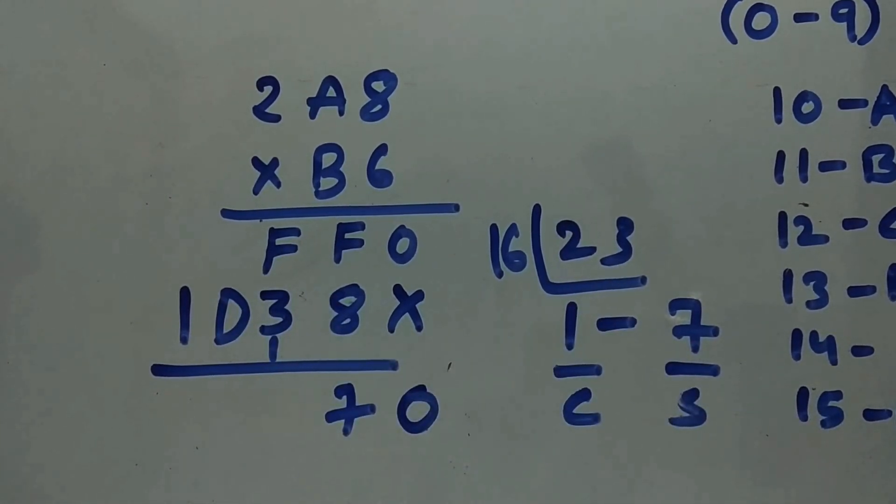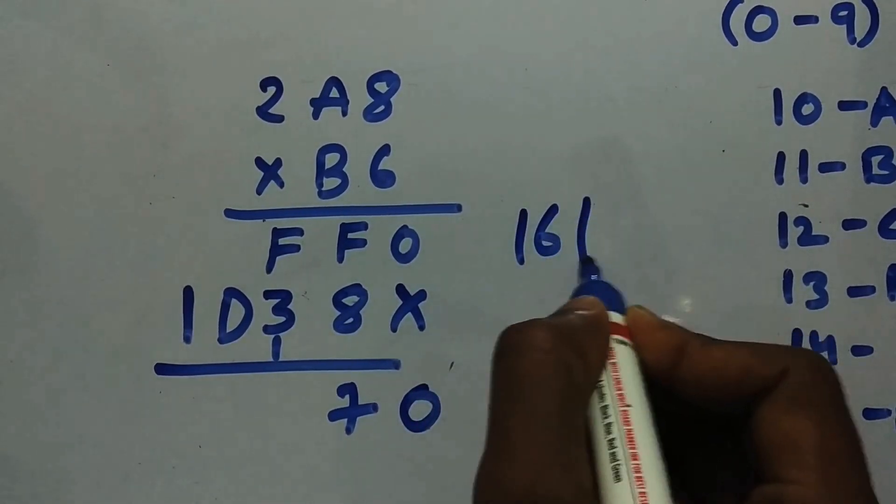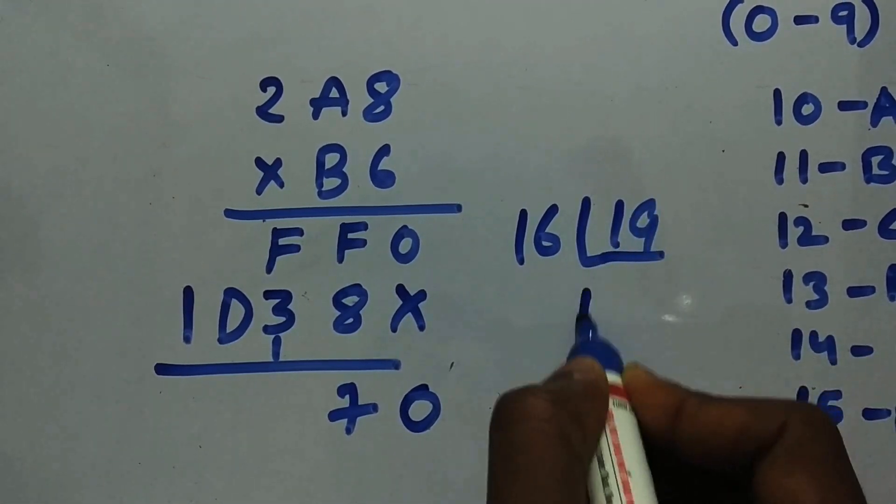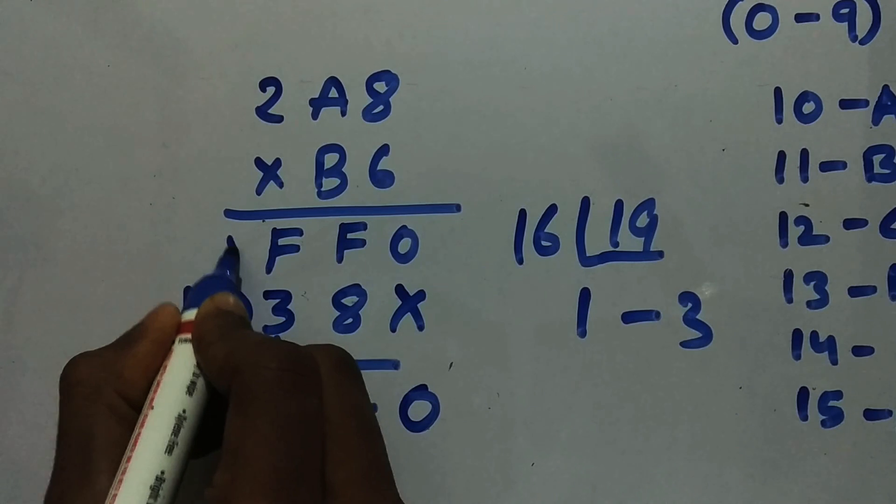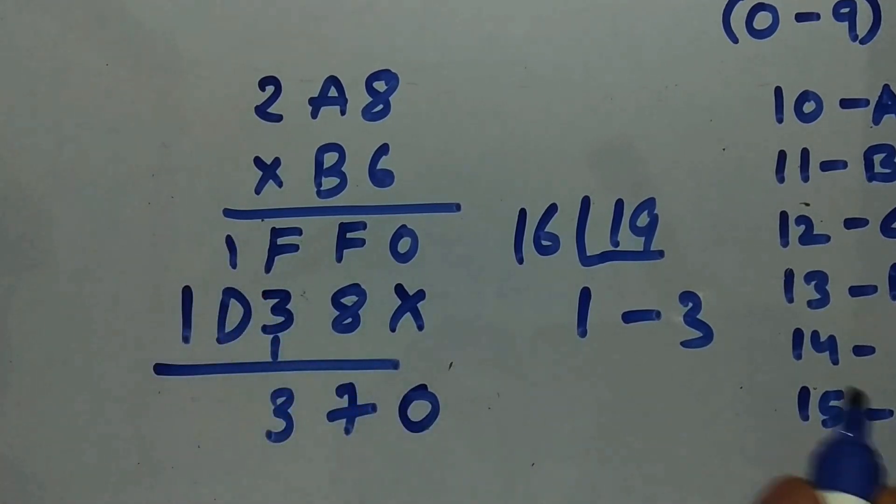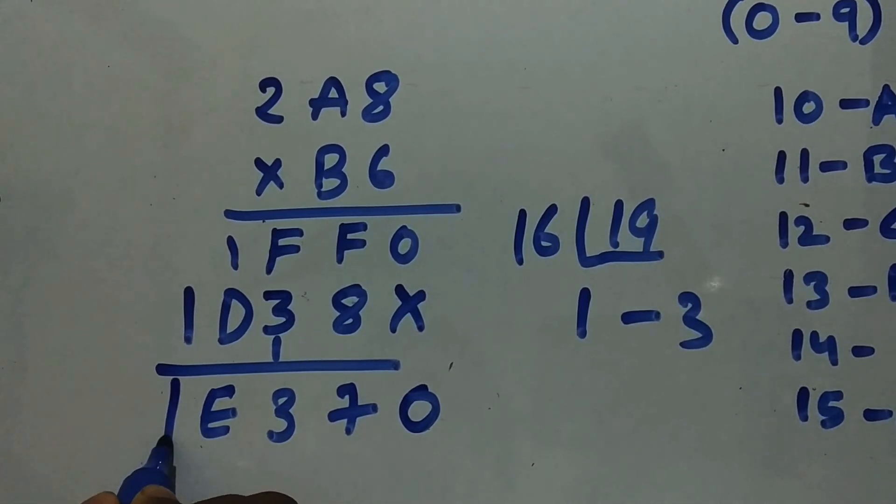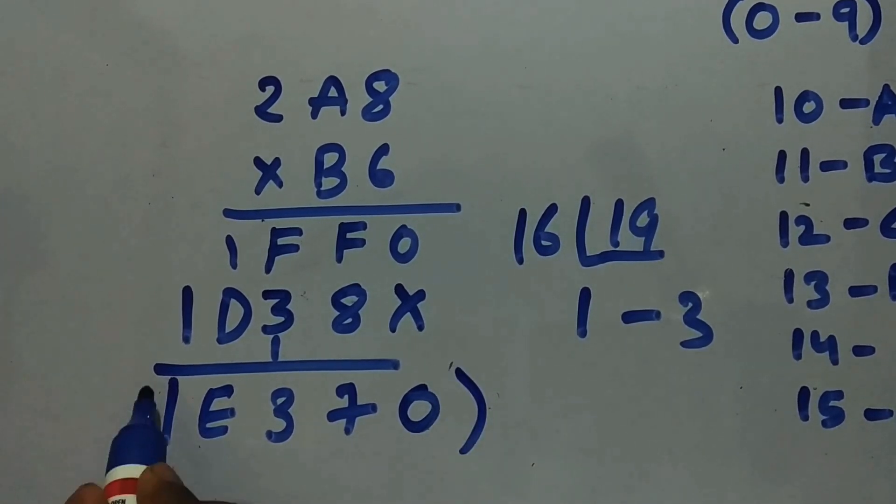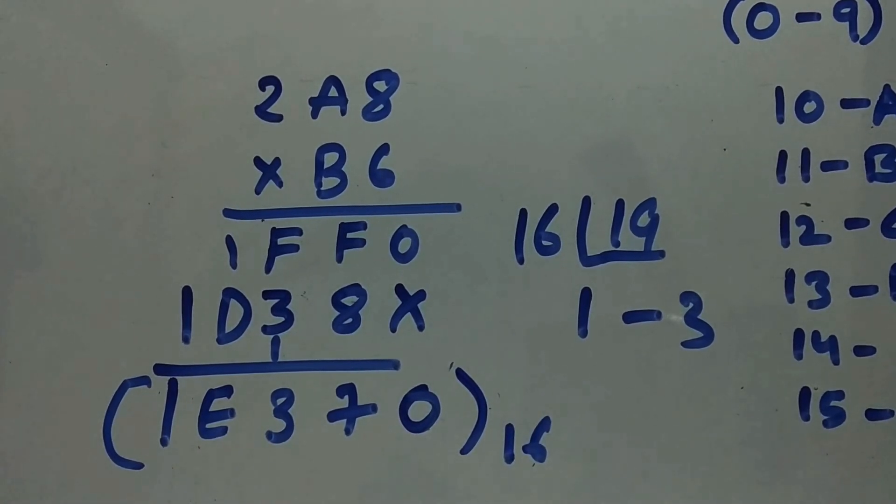F plus 4 is 19. Again convert 19 into hexadecimal. 1 times 16 and 3, so 3 is the sum and 1 is the carry. D plus 1 is E. Don't forget D plus 1 is E. So you got E over here and 1. Our answer is 1E370 base 16. If there were any decimal points, place the decimal points wherever required.